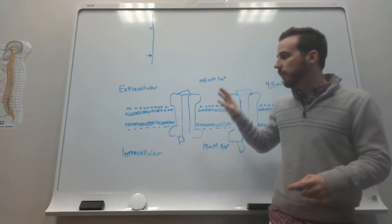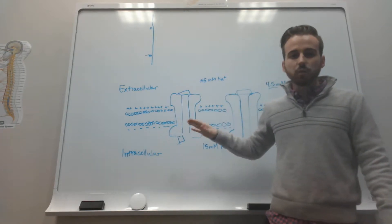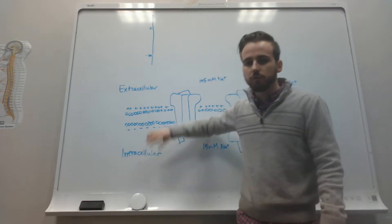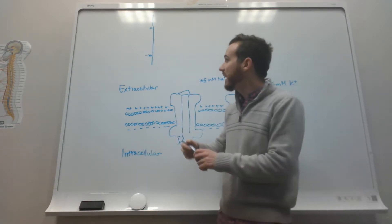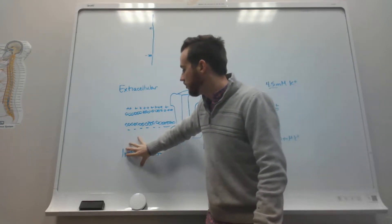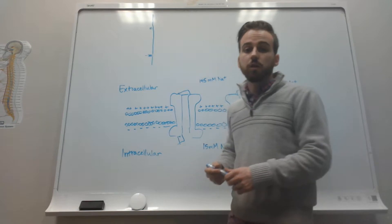Before I start talking about the action potential itself, it's important to remember that at rest, the cell on the inside is negatively charged relative to the outside. It's actually negative 70 millivolts, the charge inside of the neuron.